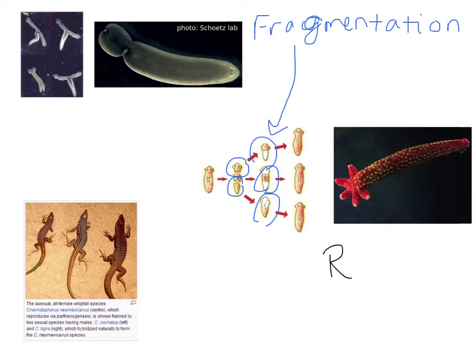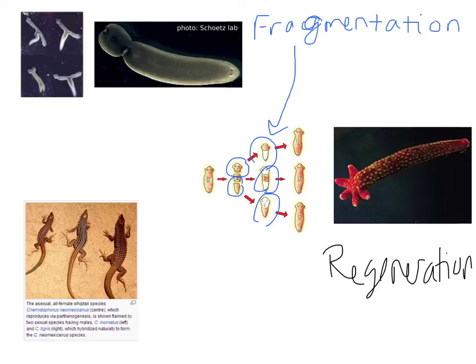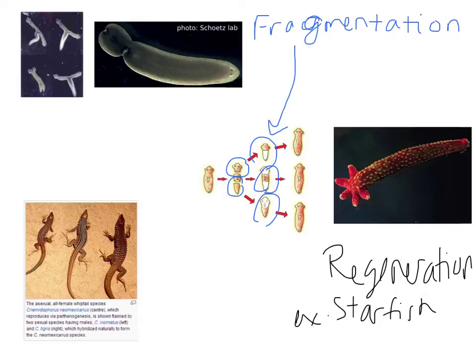There is also what's called regeneration. In regeneration, a piece of the parent is detached and it can grow and develop into a new individual. The parent didn't break into pieces like it did with fragmentation — just a piece of it has been broken off and detached, and it can grow and develop into an entirely new individual.